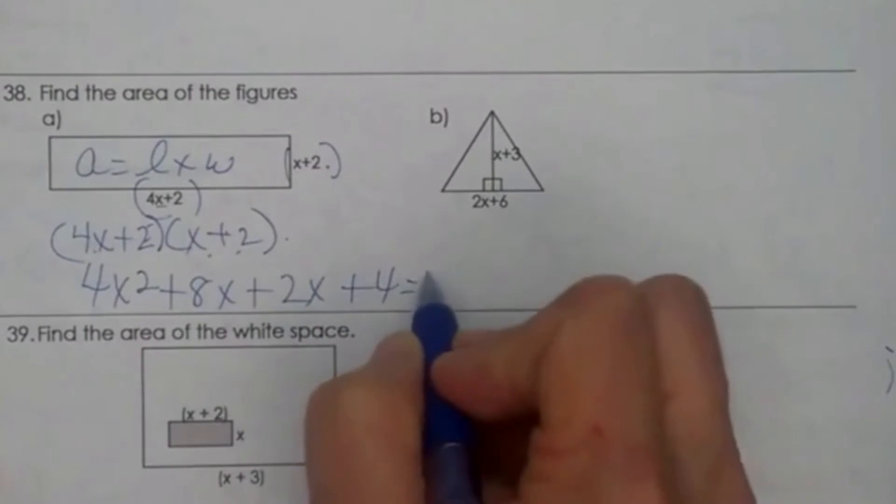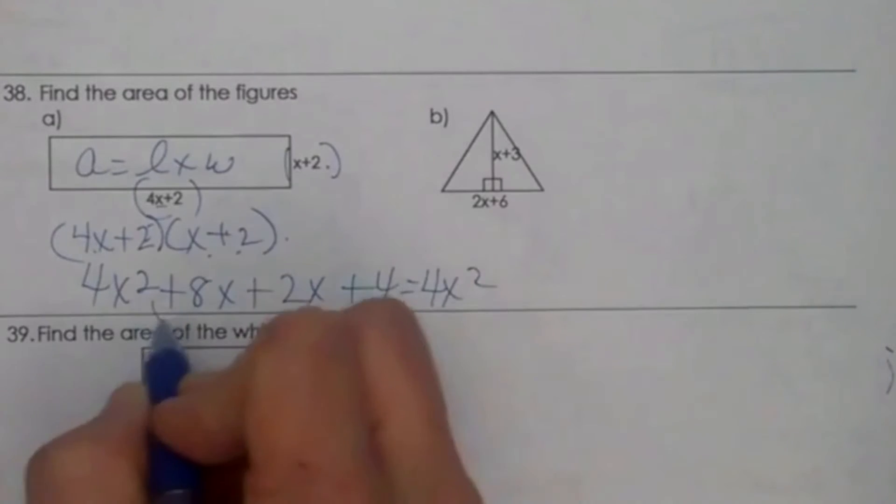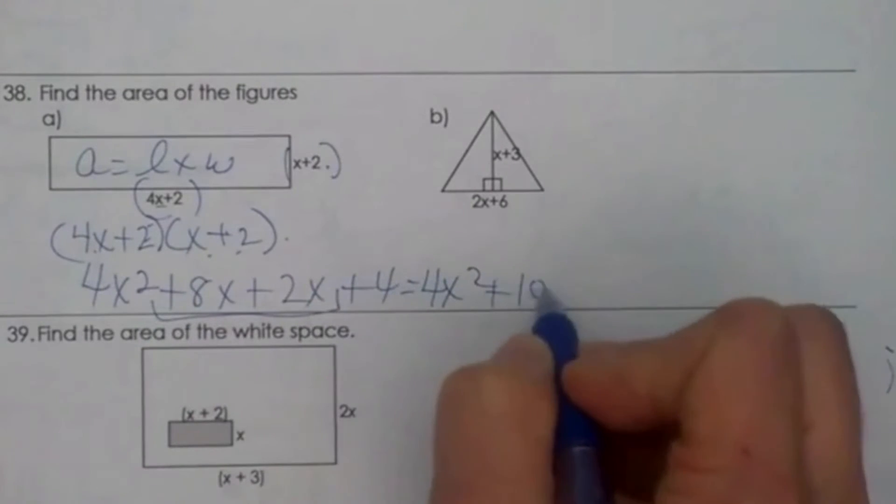The final answer ends up being x squared, combine the two middle terms, plus 10x plus 4.